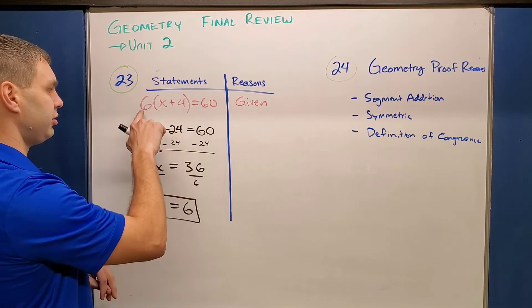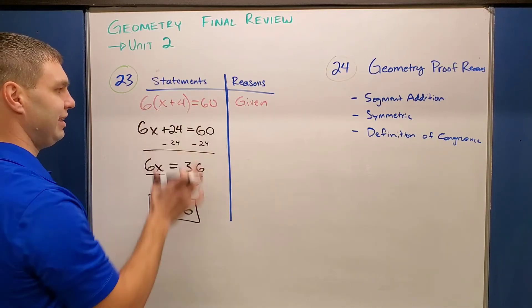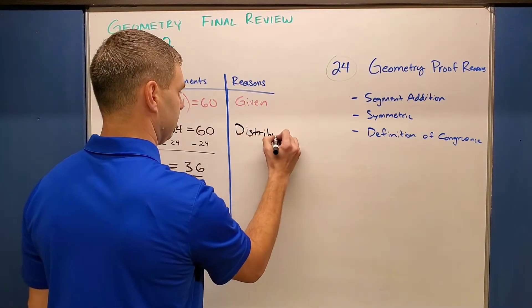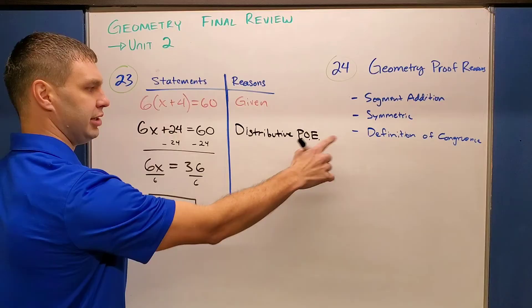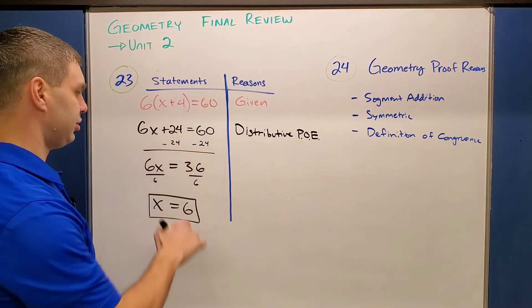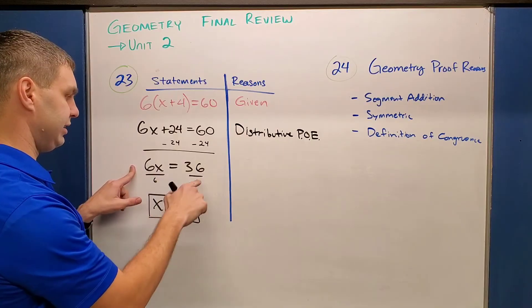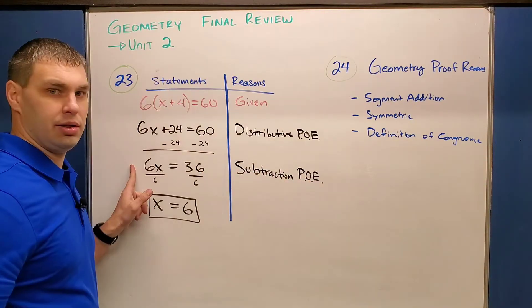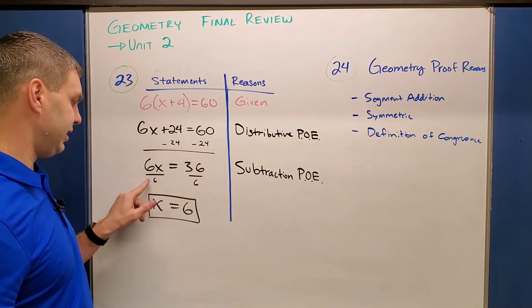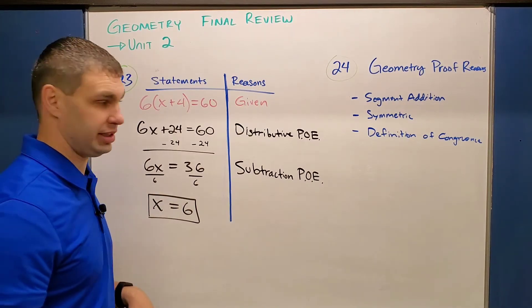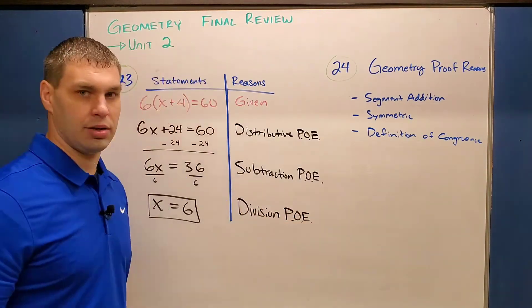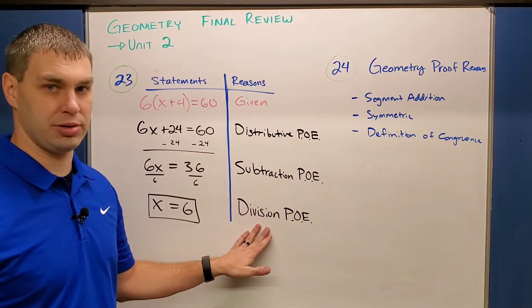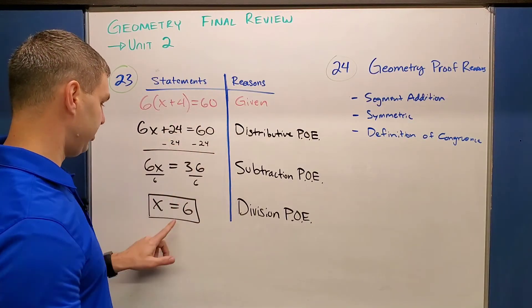Which means on the right side, I need to write the reasons for the way I got these problems to be. So first off, in order to put this 6 through to this, that's called the distributive property or distributive property of equality. And then what I did is I subtracted 24 on both sides to get this line 6x equals 36. So I'm going to say this is a subtraction property of equality. Then of course, to get my answer x equals 6, what I did is I divided by 6 on both sides. So that's the division property of equality. So by our given distributive property, subtraction property, and division property of equality, we were able to get this algebraic proof to be x equals 6.